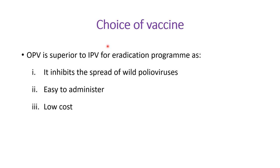Which vaccine should be chosen for the eradication program? It is oral polio vaccine. Oral polio vaccine is superior to inactivated polio vaccine for the eradication program because: number one, it inhibits the spread of wild polio viruses; number two, it is easy to administer and does not require specialized training of health workers; and number three, it is cheaper.